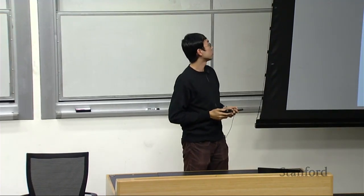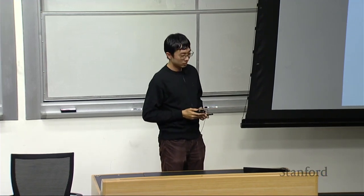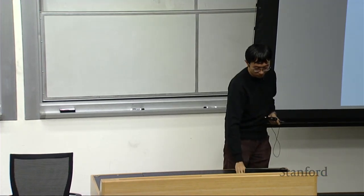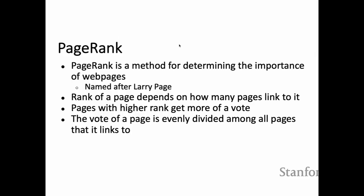PageRank is a method for determining the importance of web pages. The rank of a page depends on how many pages link to it. Pages with higher rank get more of a vote, and if a high-ranked page links to another page, that page also gets higher rank. As a quick example with three nodes Y, A, and M: we write down equations to compute the rank. Node A has two nodes linking to it: Y and M. Since Y has two outlinks, the rank of A includes r_Y over two, plus the full r_M since M has only one outlink.